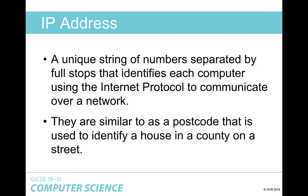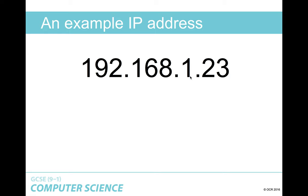Every IP address is unique on that given network, so you couldn't have two computers sharing the same IP address. An example IP address is 192.168.1.23. In the last video I explained why each individual number — all four of them — could never be greater than 255, due to the 8-bit binary numbers they're made from. So if you haven't watched that, I'd highly recommend going back, as it's quite important.